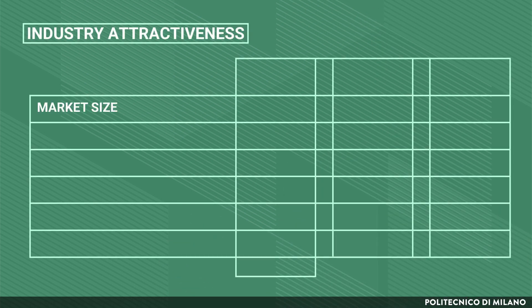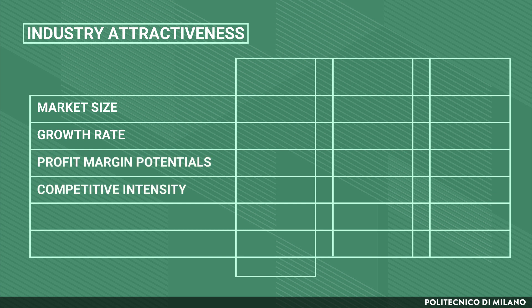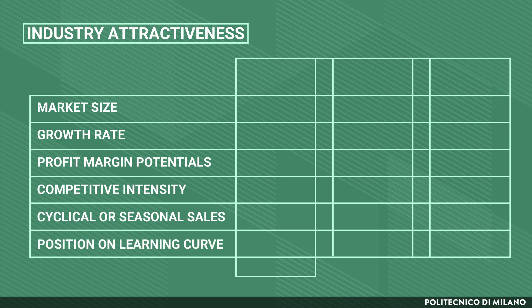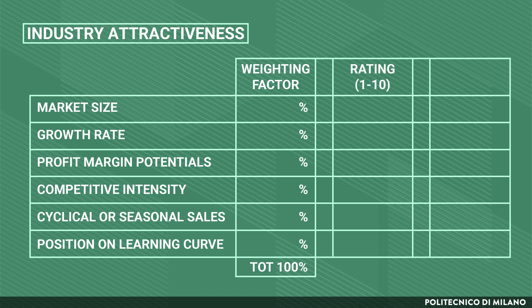Industry attractiveness is measured by several parameters, such as market size, growth rate, profit margin potentials, competitive intensity, cyclical or seasonal sales, and position on the learning curve. Those parameters are assigned a weighting factor by the decision maker on the basis of their relative importance. After that, the decision maker assigns each parameter a rating from 1 to 10. The final score for each parameter is calculated by multiplying the weight by the rating, and the weighted average resulting from the sum of all scores provides an indication about industry attractiveness.